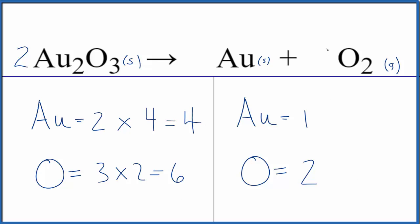But for the oxygen, we can just put a three here. Two times three, that'll give us six. Those are balanced.